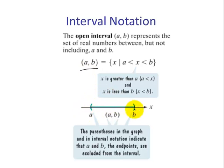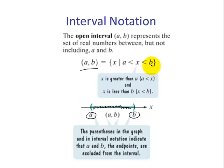If we look at the graph, here we have a number line with values A and B, and we want to express all values in between A and B, but not equal to A and not equal to B. As an inequality, X is a value in between A and B but doesn't equal A or B. In interval notation, we use a parenthesis — which corresponds to an open circle — then the smallest value A, a comma, the largest value B, and since B is an open circle, we close it with a parenthesis.